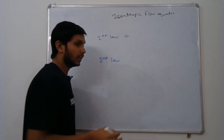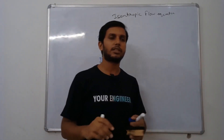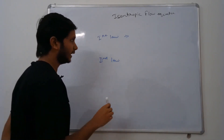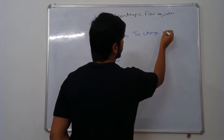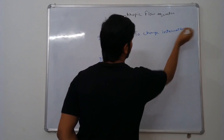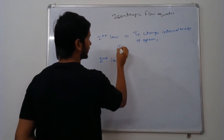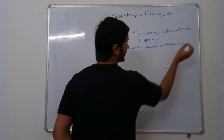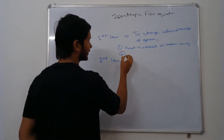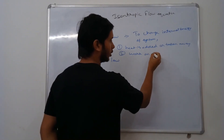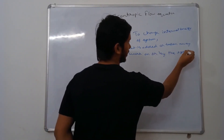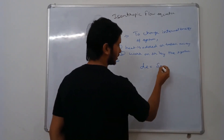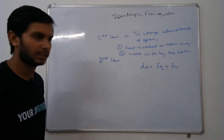In the first law of thermodynamics, we analyze a system and check the thermodynamic properties of what is happening. If we have to change the internal energy of a system, we can do two things: heat can be added or removed — that means change in heat — and second, we can do work on the system or by the system. In differential form, if dE is the change in internal energy, then changes in heat and work will change the internal energy.